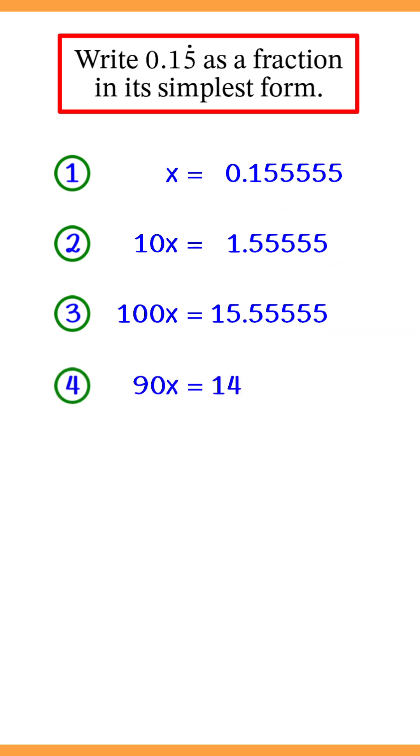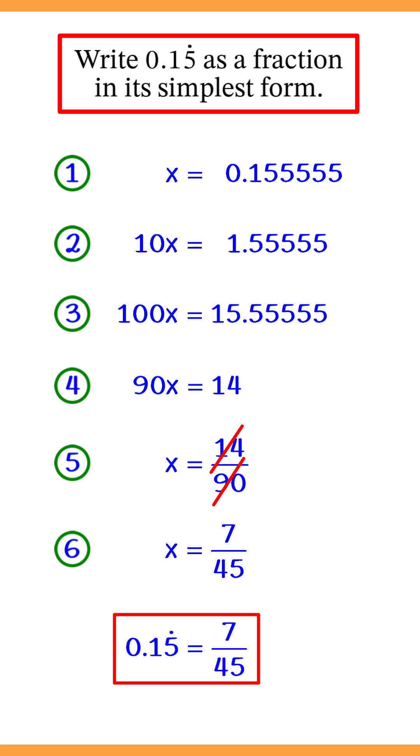So we now get 90x is equal to 14. And dividing both sides of this equation by 90 gives x is equal to 14 over 90, which then cancels to 7 over 45. So the decimal 0.15 recurring is equal to 7 over 45.